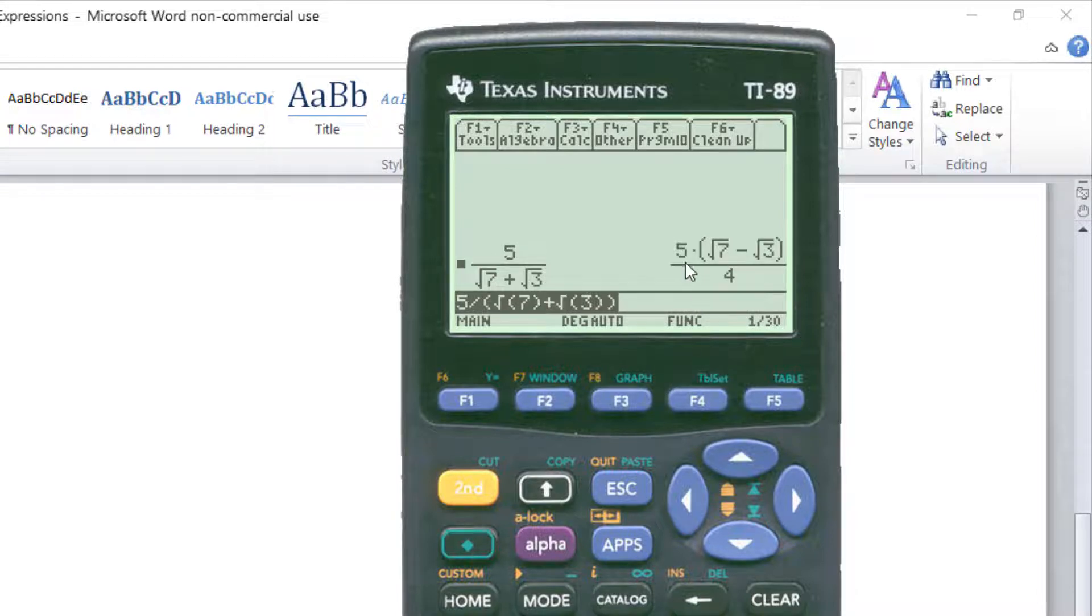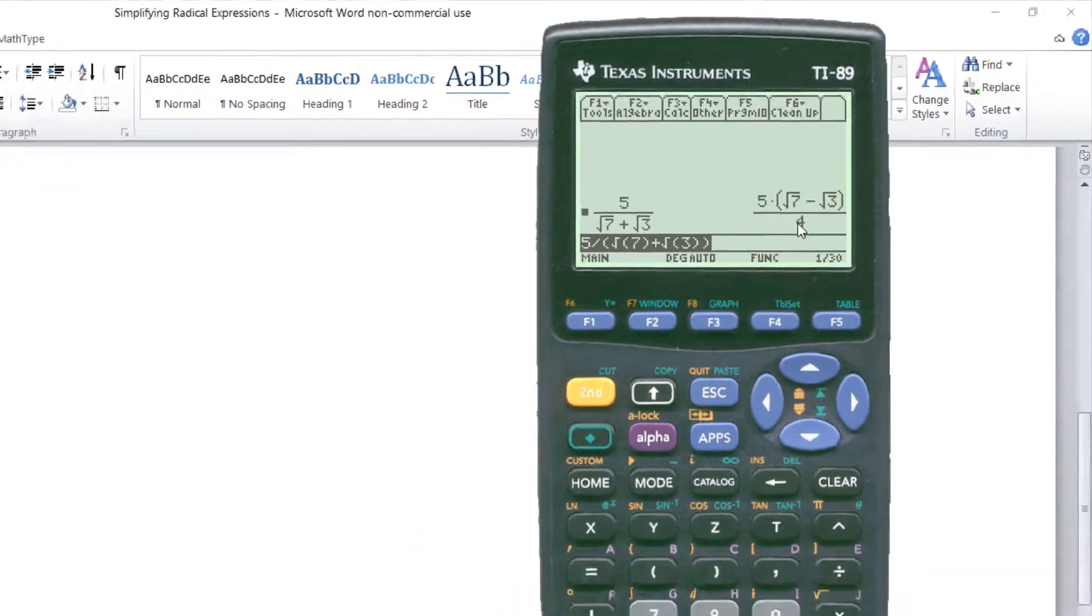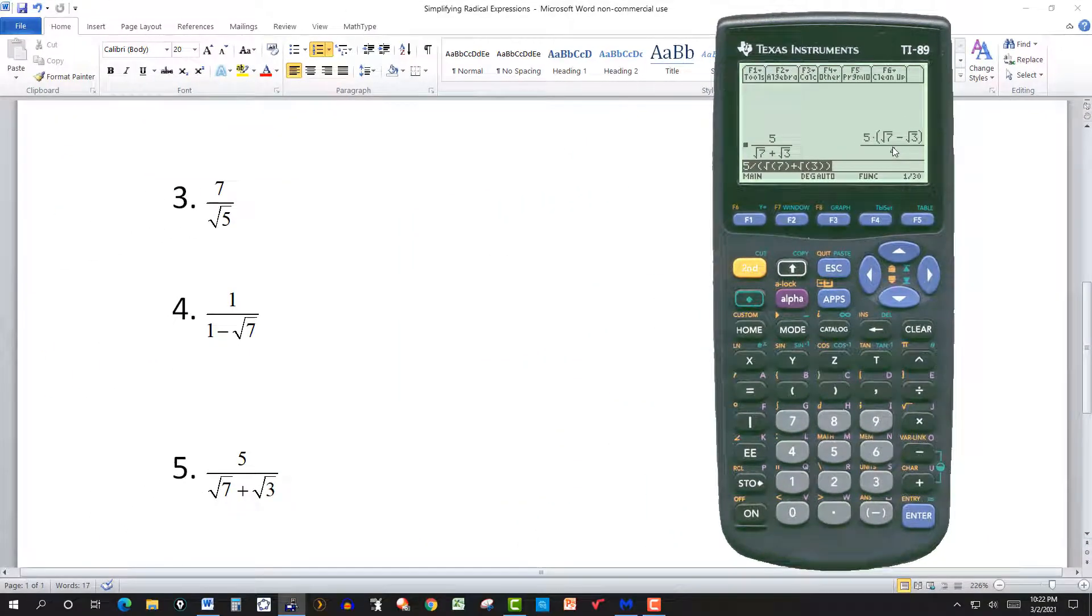So we have 5 multiplied by, in parentheses, the square root of 7 minus the square root of 3, all over 4. That's pretty much in simplified form. We do have a radical in the numerator, but it's in simplified form. Well that's your answer.